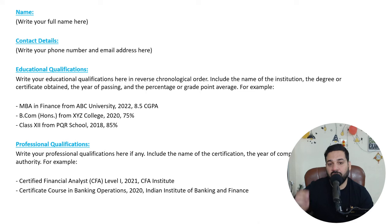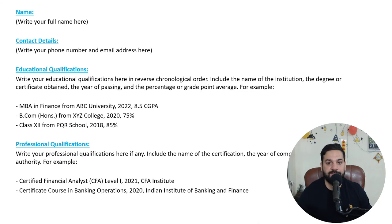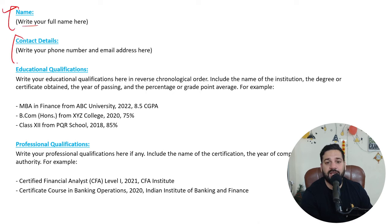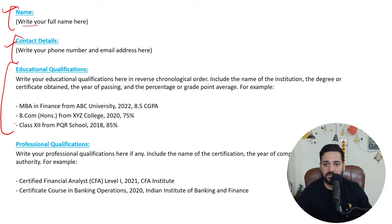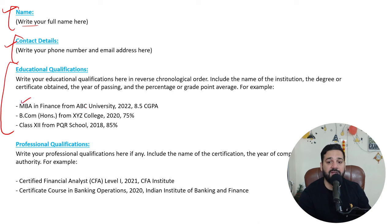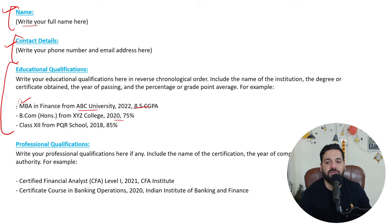This is the simple template. Start writing with your full name, then your contact details — phone number or email address. Then your educational qualification in reverse chronological order: whatever your highest qualification is will be listed first, along with the university and CGPA. Keep it a simple, clean format.